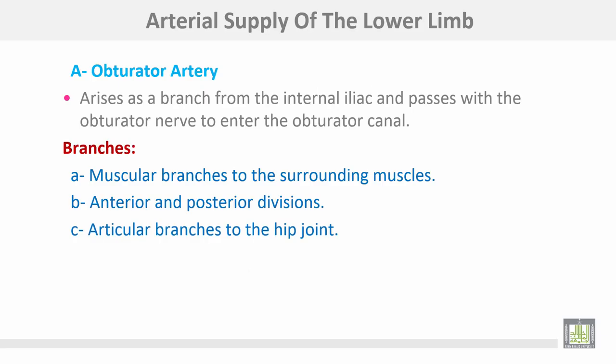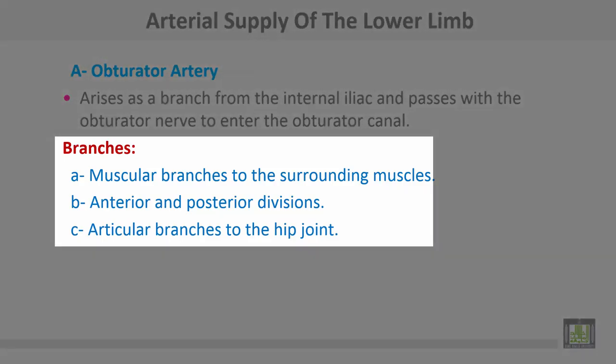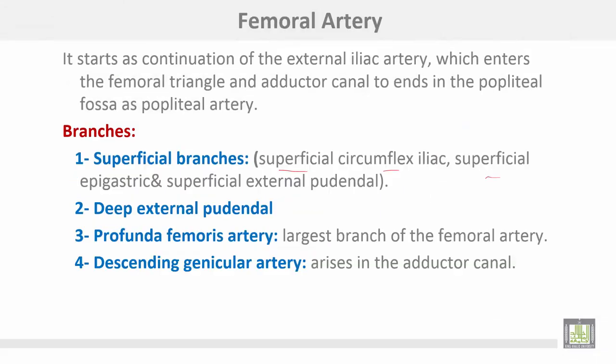Arterial supply of the lower limb. Number one, the obturator artery arises as a branch from the internal iliac and passes with the obturator nerve to enter the obturator canal. Branches include muscular branches to the surrounding muscles, anterior and posterior divisions, and articular branches to the hip joint. The femoral artery arises as a continuation of the external iliac artery, which enters the femoral triangle and the adductor canal to end in the popliteal fossa as the popliteal artery.